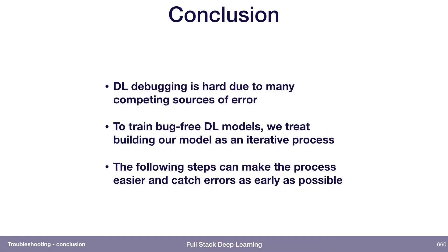So to wrap up, the things I want you to take away from this are that deep learning troubleshooting and debugging is really hard. In my view, the main reason why it's so hard is that for a given sort of degradation in performance, there are many different competing sources of error that could be causing that.